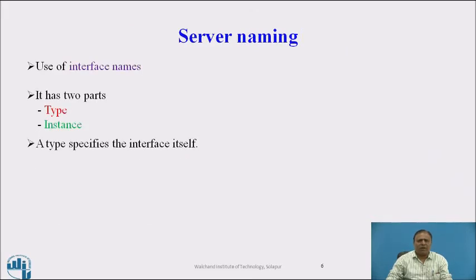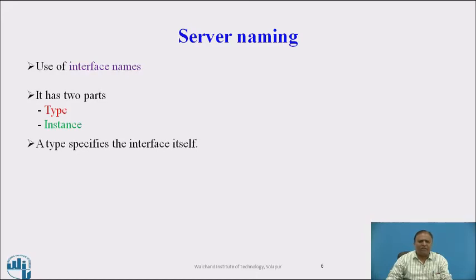Server naming uses interface names, which have two parts: a type and an instance. A type specifies the interface itself, while an instance specifies a server providing the services within that interface. The central component of the client-server model is the interface — the set of remotely callable operations offered by the server and invocable by clients. For example, an interface of type file server may have several instances providing file service.